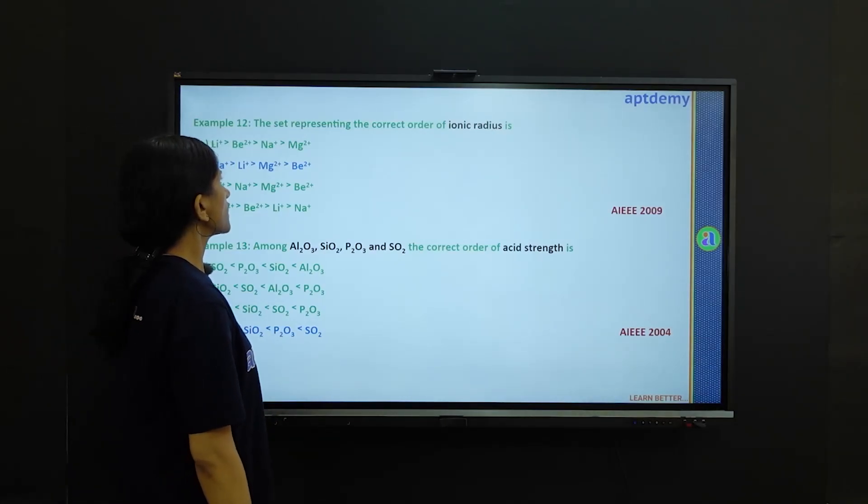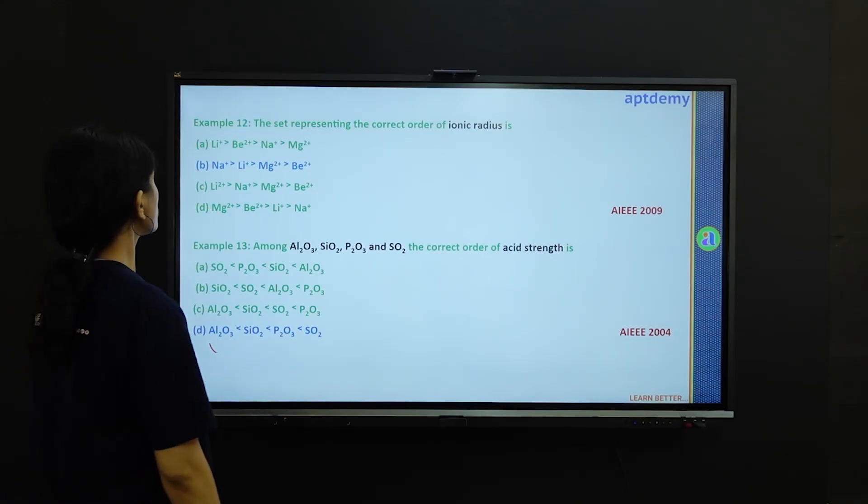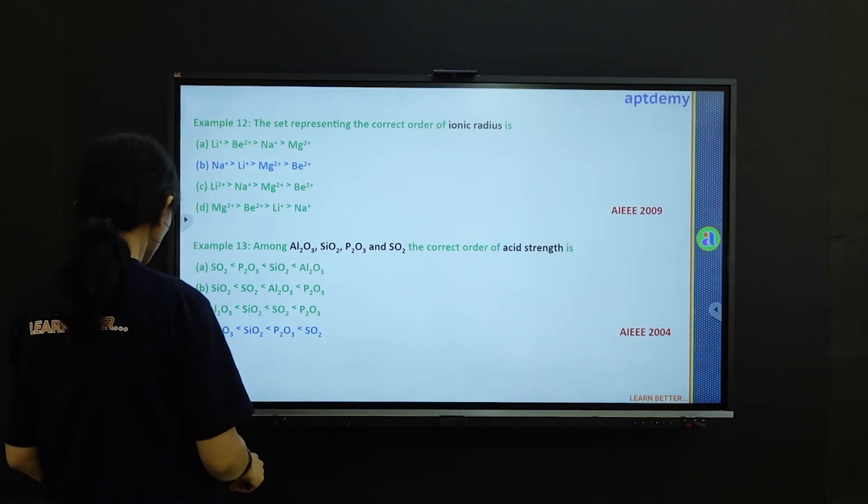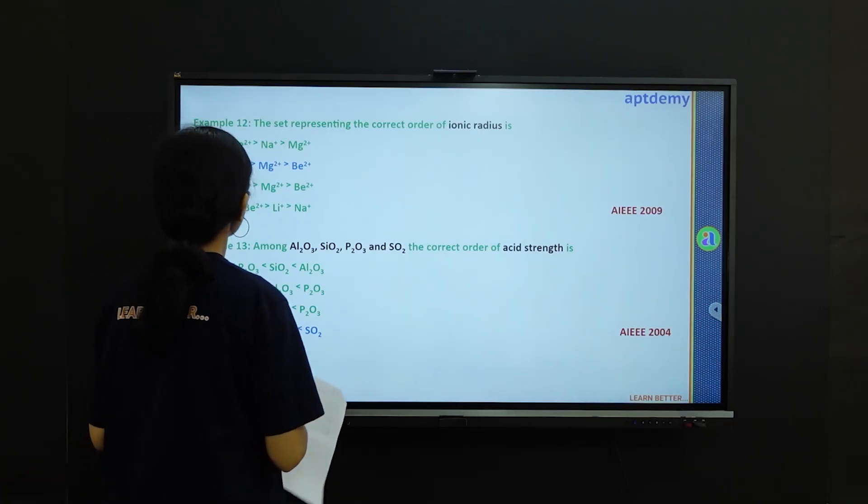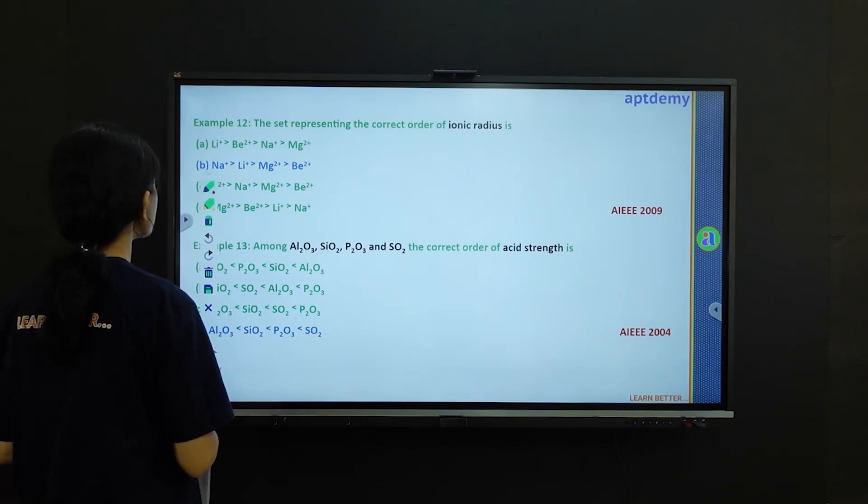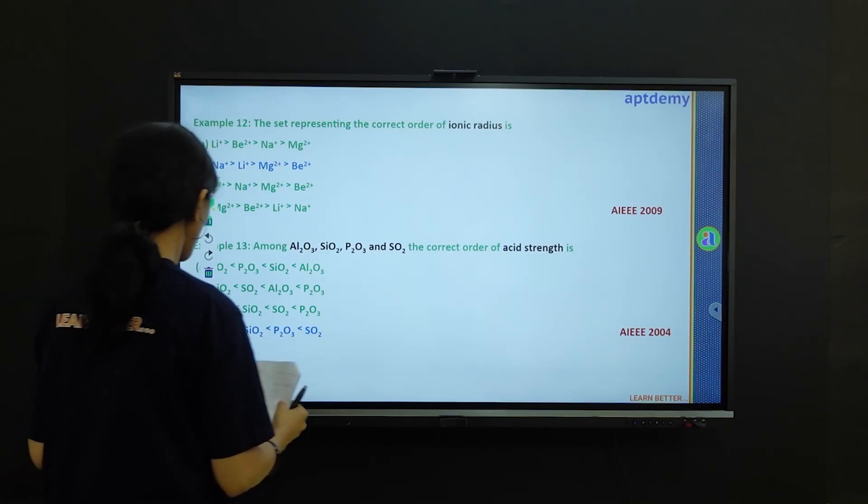Example 12 is asking the set representing the correct order of ionic radius. Let's check. The elements which are given are lithium plus, beryllium 2 plus, Na plus and Mg 2 plus.